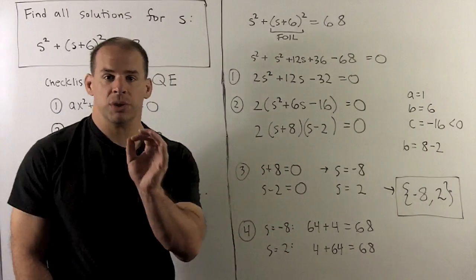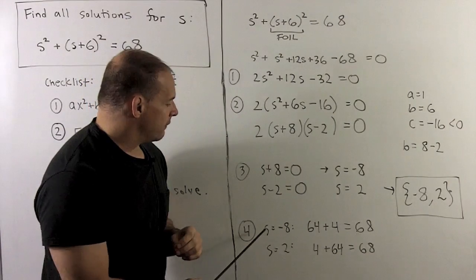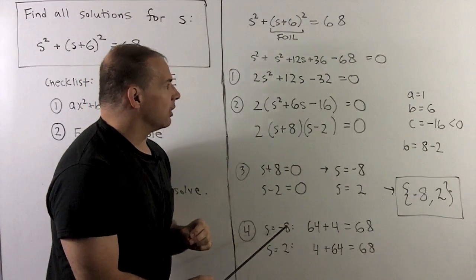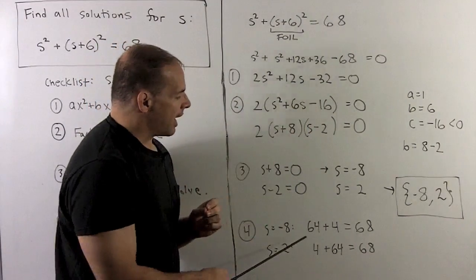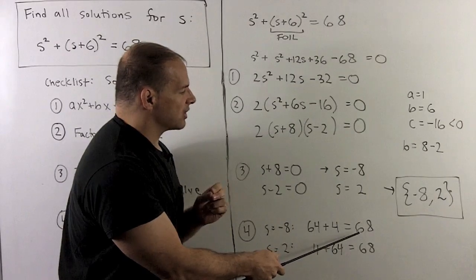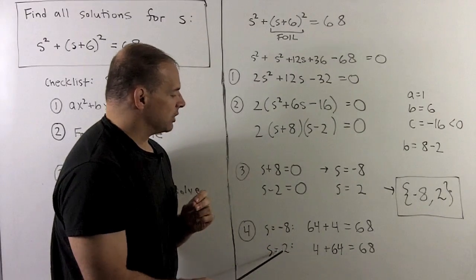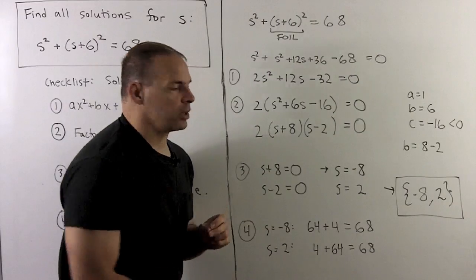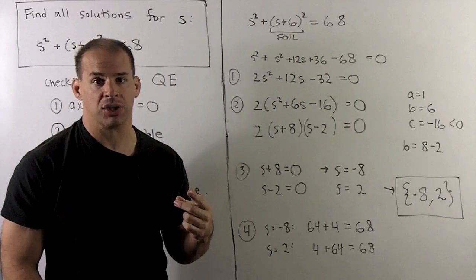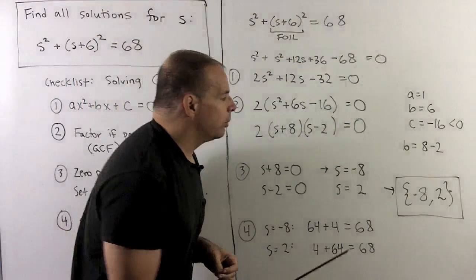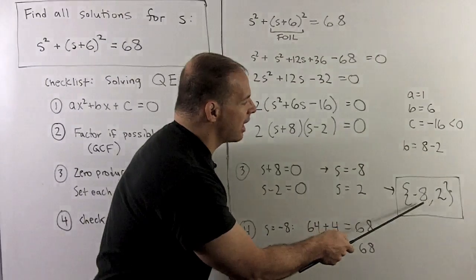Now, we always check our work. If I take S equal to minus eight in the original equation, I have 64 plus four is equal to 68. So that checks out. If I have S equal to two, I have four plus 64 equals 68. And that checks out also. So our final answer, we put in braces minus eight comma two.